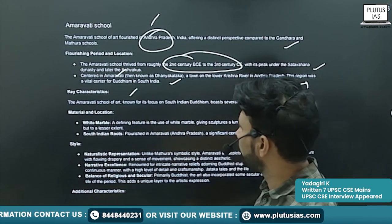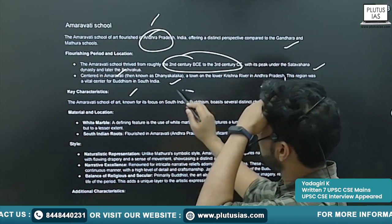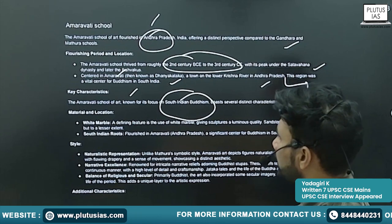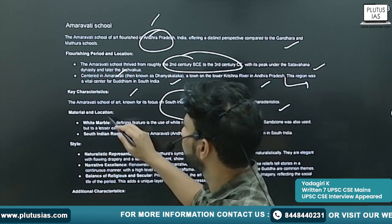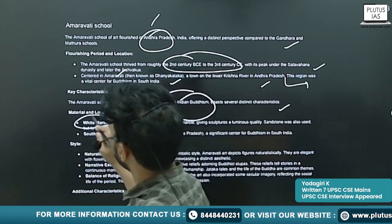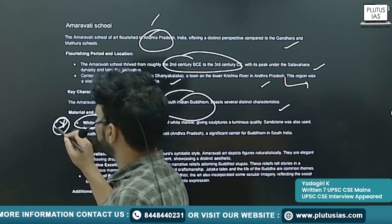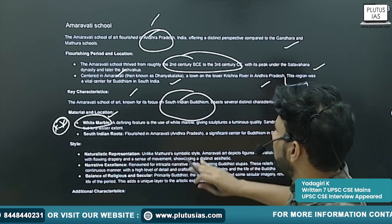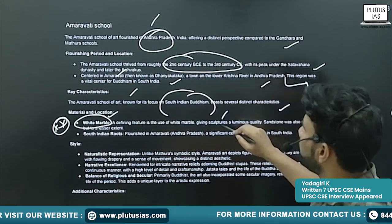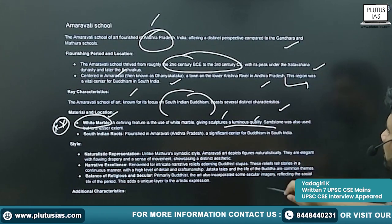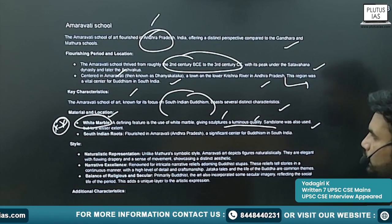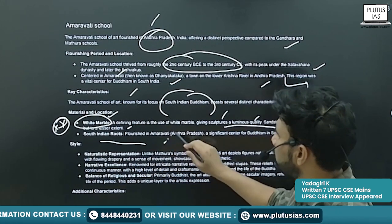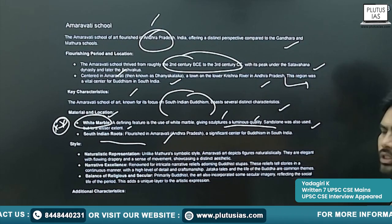If you see the key characteristics, it focuses on South Indian Buddhism and boasts several distinct features. The material used is white marble — this is a very important aspect. The white marble gives sculptures a luminous quality. Sandstone was also used but to a lesser extent.